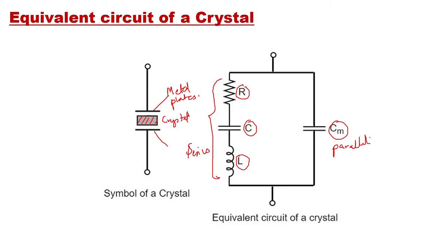In the series combination of R, C, and L: when the reactance of C (that is XC) and the reactance of L (that is XL) become equal and opposite, they cancel out each other and only resistance R remains in the circuit, and at that time the circuit exhibits series resonance. Similarly, when the reactance of the RLC branch equals the reactance of capacitance Cm (that is XCm), it will exhibit parallel resonance. So this crystal can show both series resonance and parallel resonance.